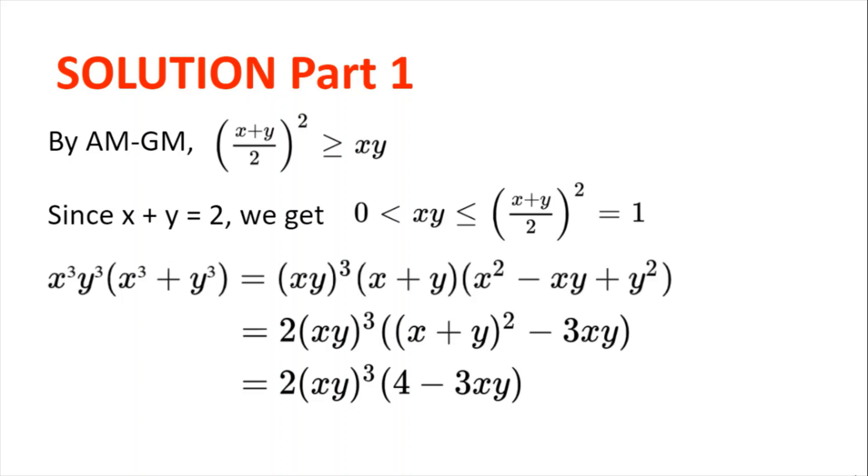Solution. By AM-GM inequality, ((x+y)/2)² ≥ xy. Now, since x + y = 2, the left hand side of the AM-GM will be 1. And because x and y are positive reals, we get 0 < xy ≤ ((x+y)/2)² = 1.